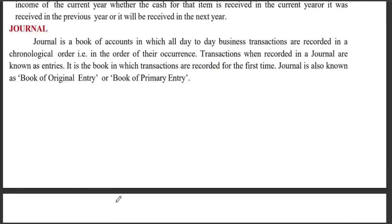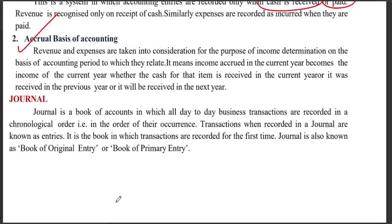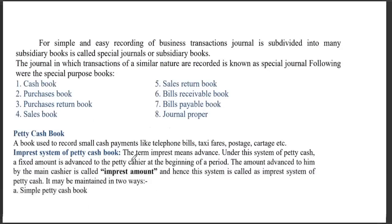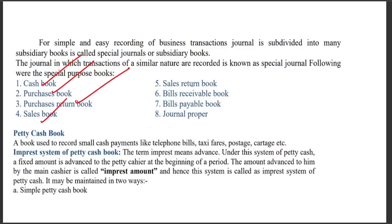The journal records day-to-day transactions in chronological order. It is called the Book of Original Entry or Book of Primary Entry. The journal is also known as subsidiary books or special journals, which include: cash book, purchase book, purchase returns book, sales book, sales returns book, bills receivable book, and bills payable book.